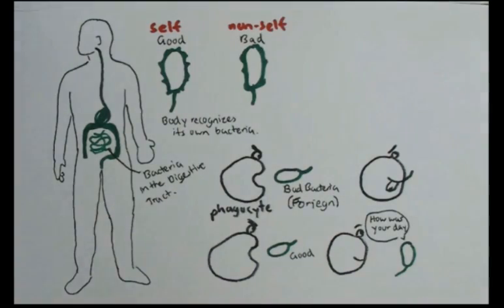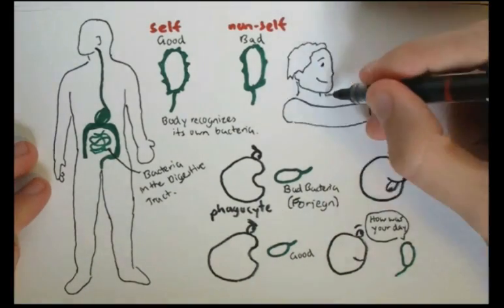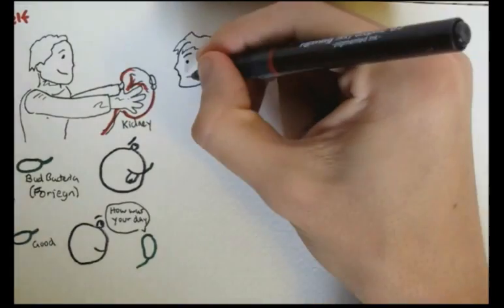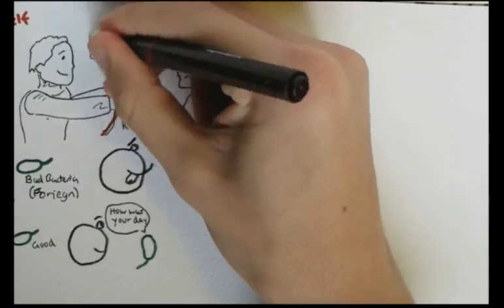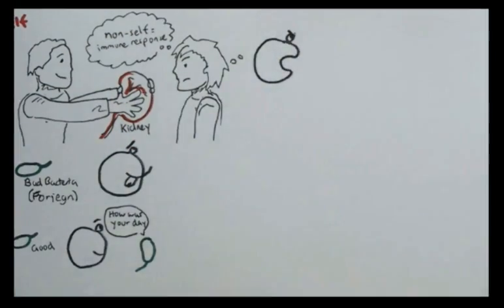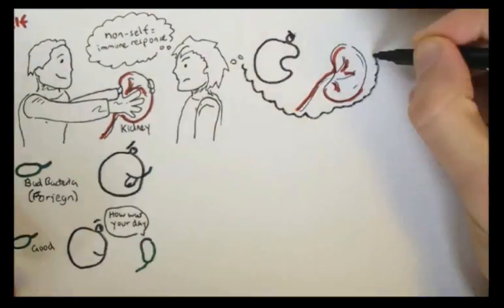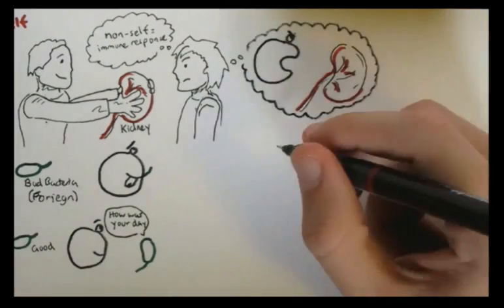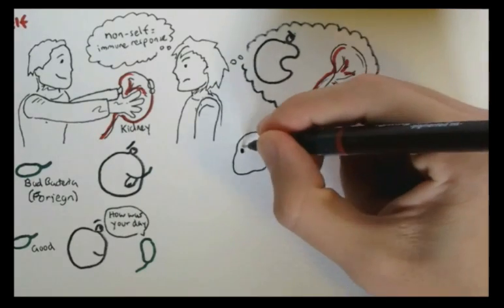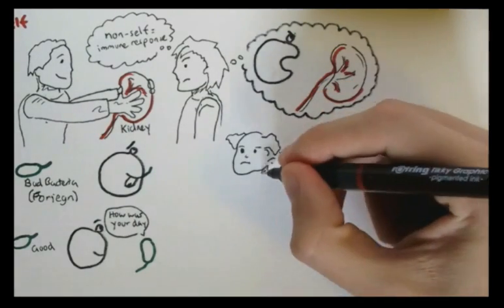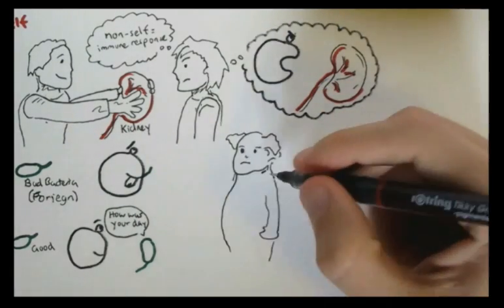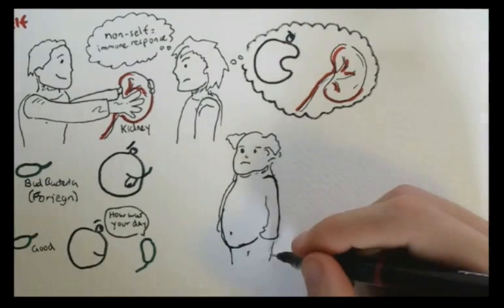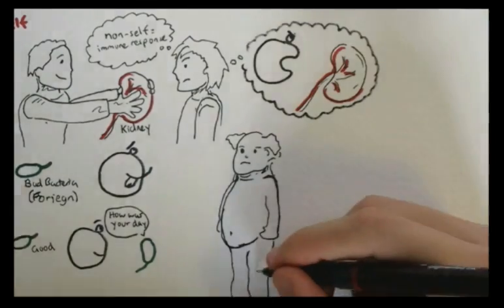And this is why you hear about unsuccessful organ transplants, because the new organ is a foreign substance. It is a non-self substance. A non-self substance will initiate an immune response, triggering an attack on that new foreign organ. The body can also attack itself. When this happens, it is called an autoimmune disease, when the immune system is out of whack, and its own immune cells begin acting as though the body's own organs are foreign, or non-self substances.